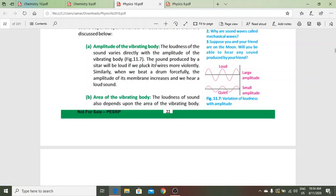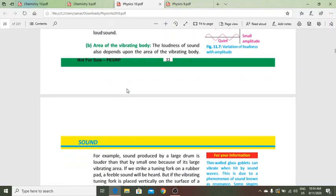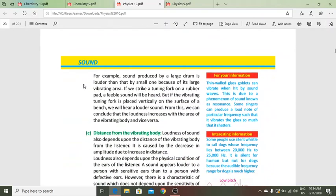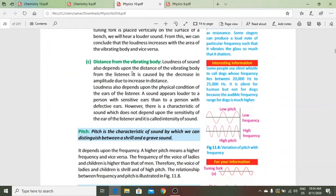Amplitude of vibrating body. Agar hum drum ko force se beat karen to amplitude increase hoga and we can hear a loud sound. Area of vibrating body. Jo loudness hai woh area par depend karti hai. Sound jo loud drum se produce ho rahi hai woh zyada hai. Agar hum tuning fork ko rubber pad par strike karen to bahut feeble sound hogi, lekin agar hum use kisi bench par strike karen to bahut loud sound hogi.